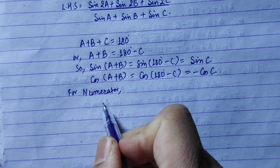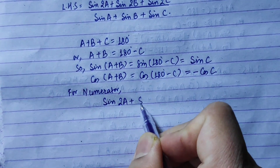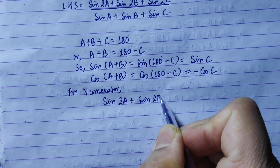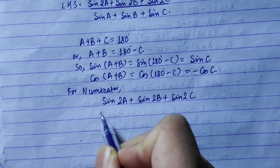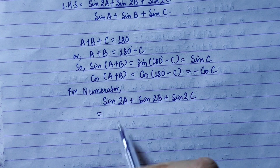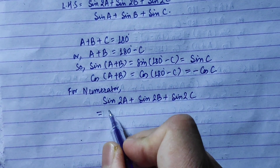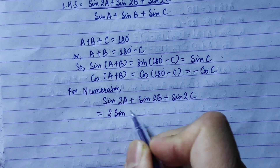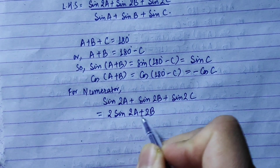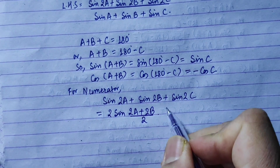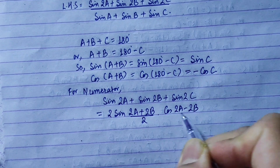For the numerator, we have sin2a + sin2b + sin2c. Applying the sum-to-product formula: sin2b + sin2a equals 2·sin(c + d)/2 · cos(c − d)/2, leaving the third term sin2c separate.